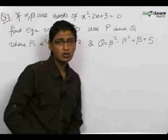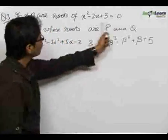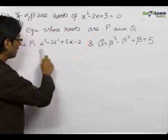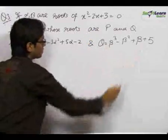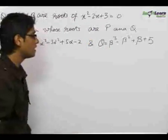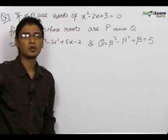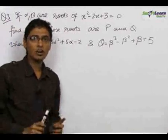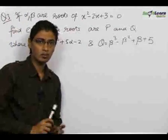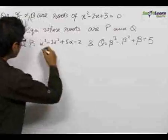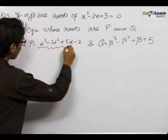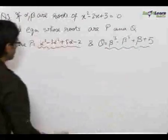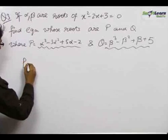A foolish and longer method would be to find both roots alpha and beta of the quadratic equation, substitute into the expressions to get p and q, then find the sum and product of roots to form the quadratic equation. But this is a very long method and should not be applied. Instead, we reduce the longer expressions into simpler terms.